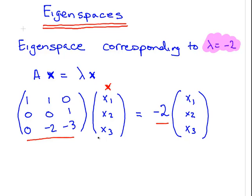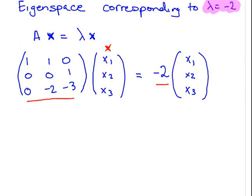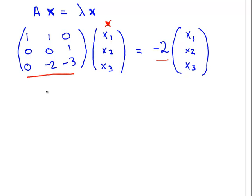Lambda equals minus 2. Let's solve both sides and write it out. The left hand side can be written as x1 plus x2 plus 0 times x3. The next line, x3, 0 times x1, 0 times x2 plus 0 times x3. And finally, the last line is minus 2 times x2 minus 3 times x3.